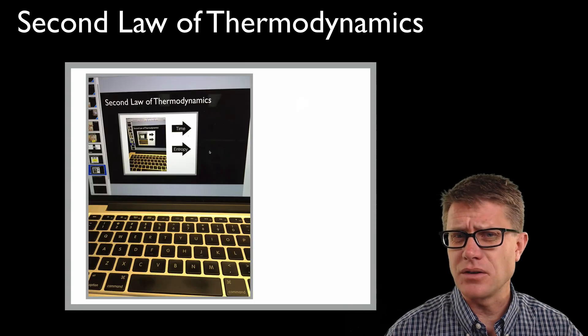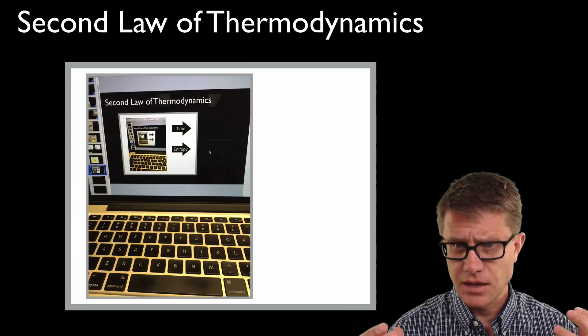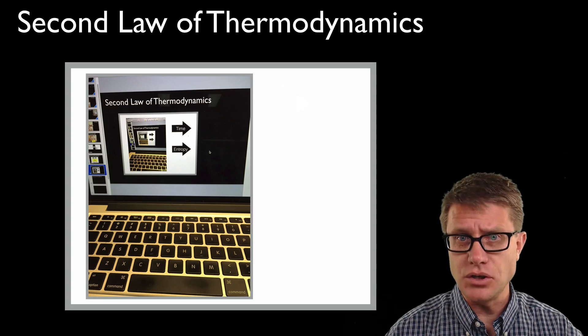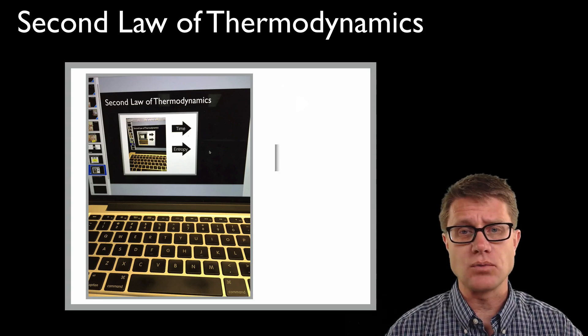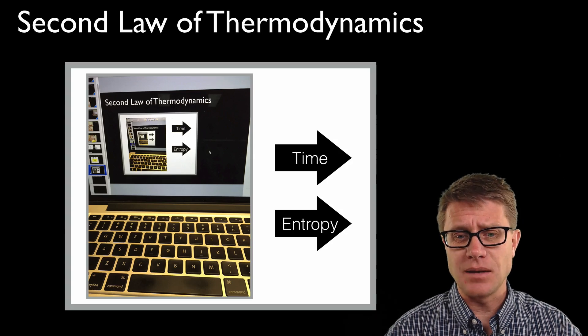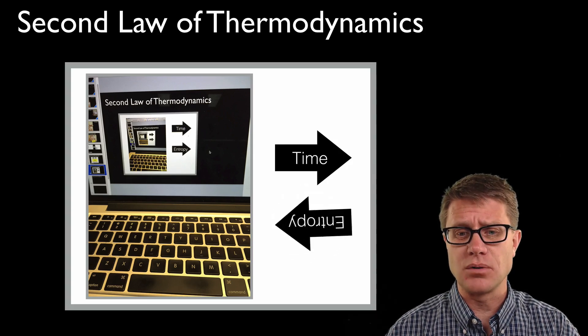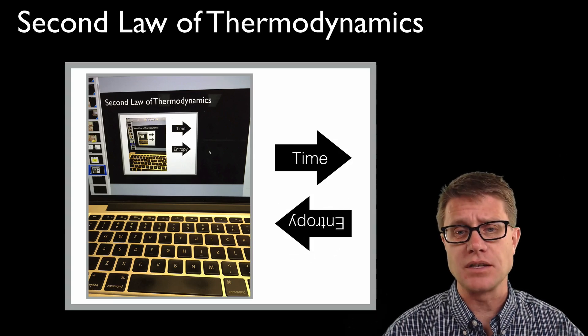But this might seem counterintuitive. How could I make something like this video and this computer? They seem to have a huge amount of order. They don't seem to be chaotic at all. So it seems like time and entropy in this case are reversed. Over time we have something that is more complex.